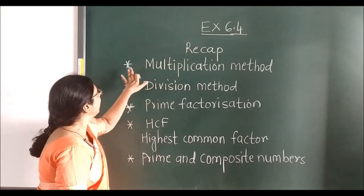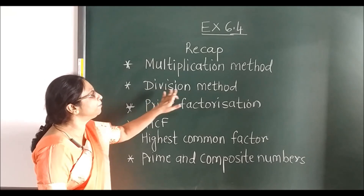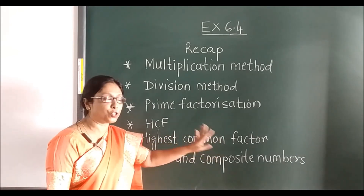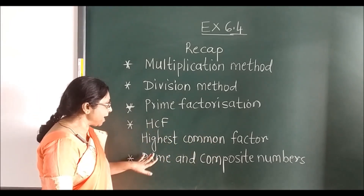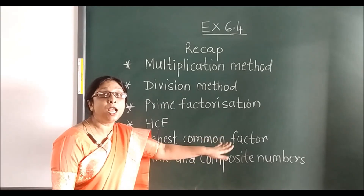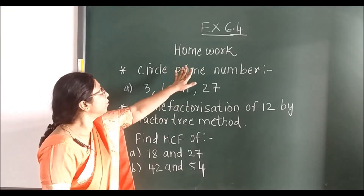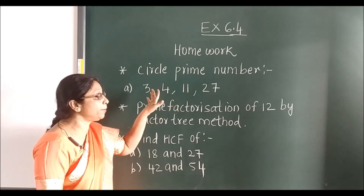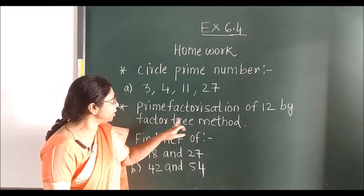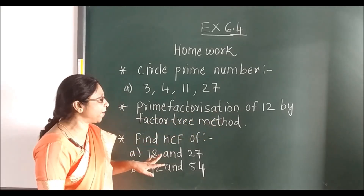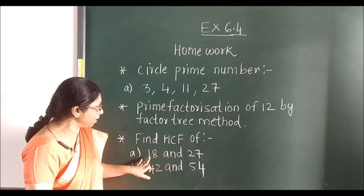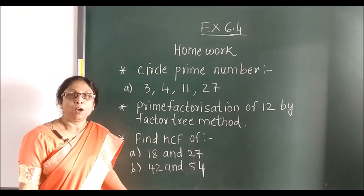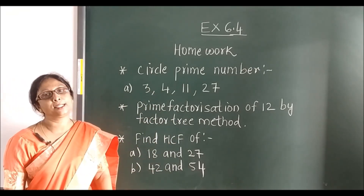Recap: we have seen the multiplication method, division method, prime factorization, and HCF — Highest Common Factor. We have also seen how to find prime and composite numbers. Your homework is: circle the prime numbers, then use prime factorization — the factor tree method — and find the HCF of 18 and 27, and 42 and 54. We will meet in the next video. Till then, take care.